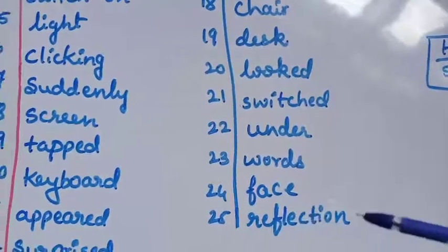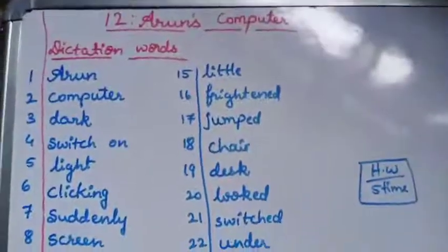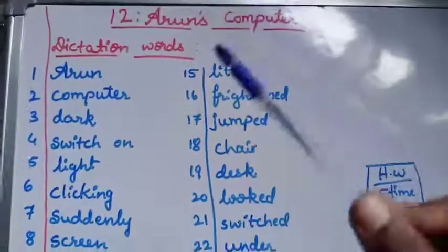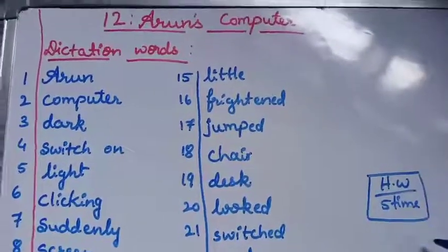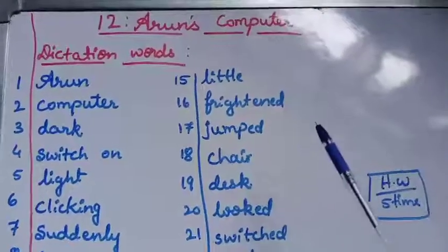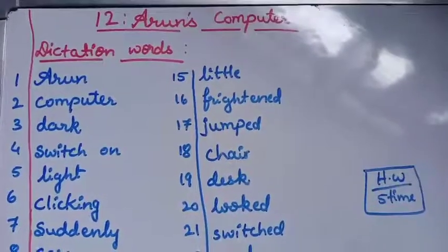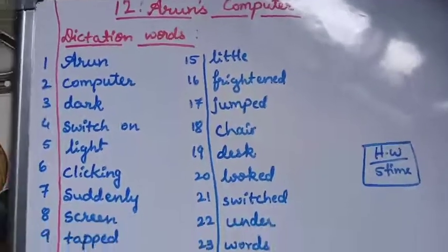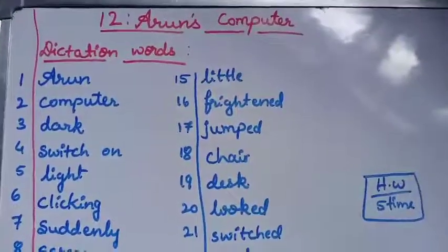So here we have completed our dictation words. Total I have given 25 difficult words. As you all know, you should write all these 25 words one time. In the next page, you have to write each one word five times. That is your today's homework. Kindly while writing, read and write. That is very, very, very important children. Reading is very important. Give 100% to reading. So I will see you in the next class children. Take care and complete your homework. Thank you. Bye-bye. Bye-bye.